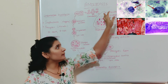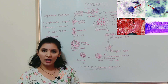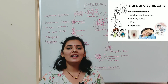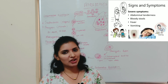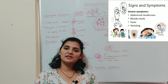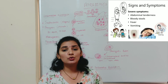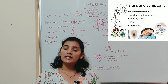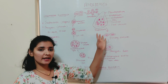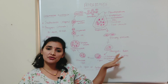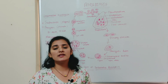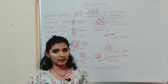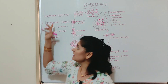Other symptoms of amoebiasis include diarrhea alternating with constipation, abdominal pain, cramps, and stool with excess mucus and blood clots. In severe cases, this parasite may spread to other organs, where it may cause ulcers and abscesses, which can be fatal.